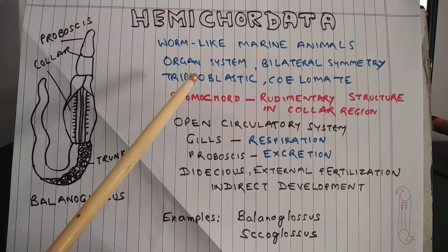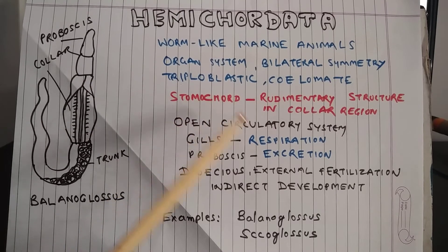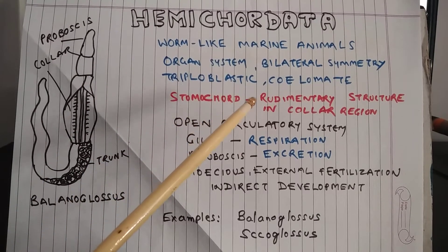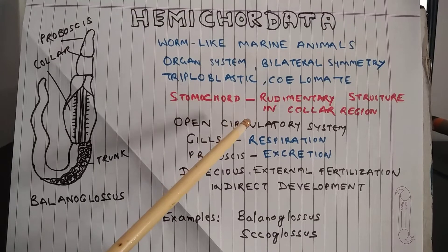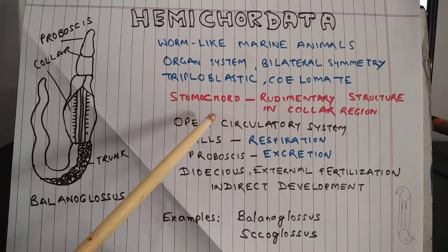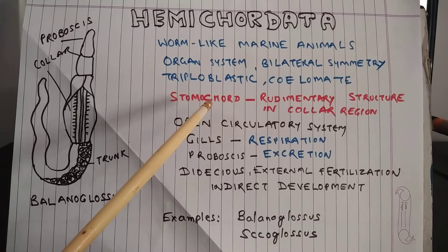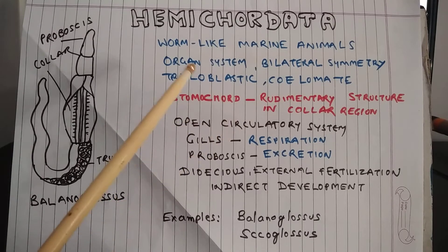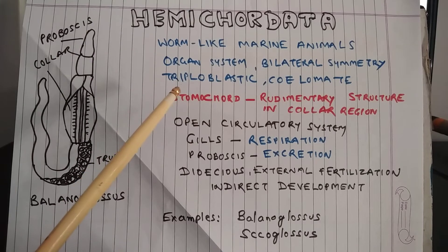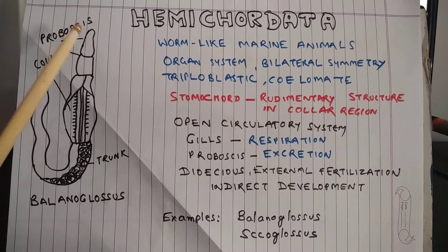They are acoelomate — coelom is absent — and that is why organ system level organization is present. There is a rudimentary structure in the collar region of these animals called the stomochord, and the stomochord is somewhat similar to the notochord.